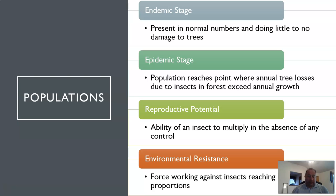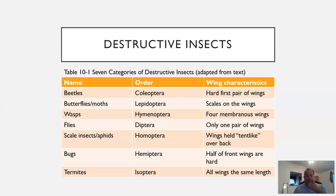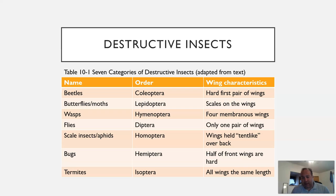We have seven categories of destructive insects: beetles, butterflies, wasps, flies, scale insects or aphids, bugs, and termites. These are their orders in terms of classification, and they have differences in their wings. Rather than focusing on wing characteristics, I'd rather you focus on how these bugs fit into different categories and how those categories differ in the damage they cause to the forest.